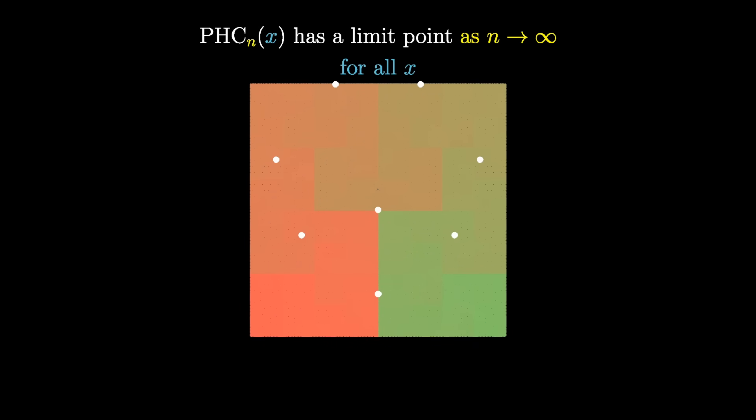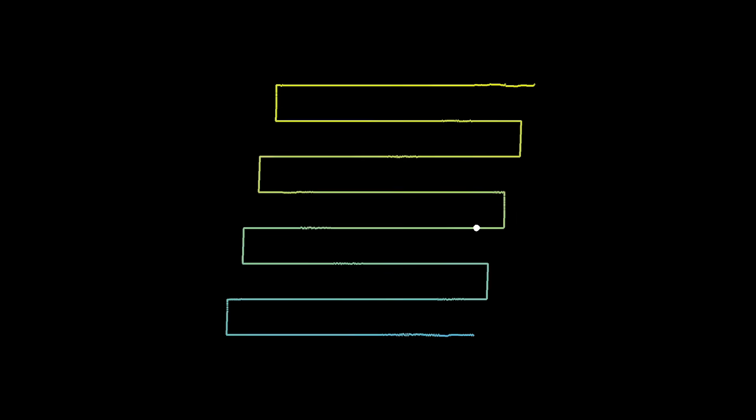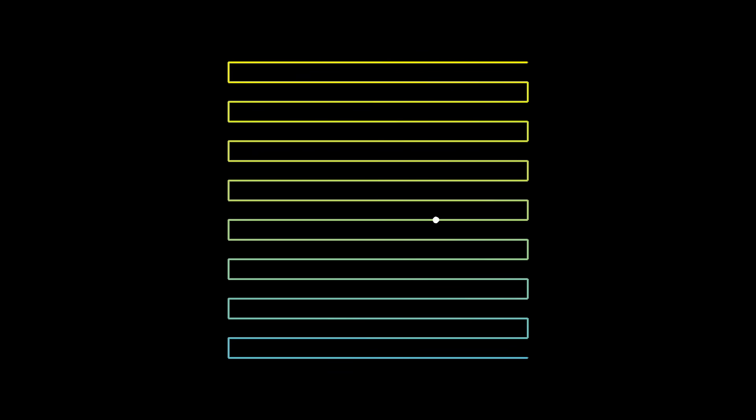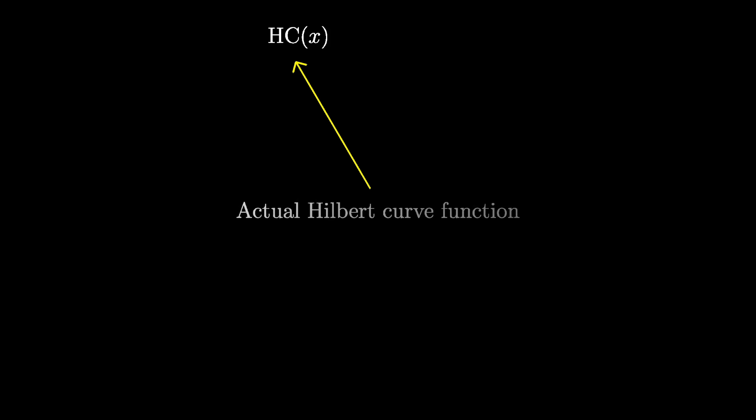This is absolutely not true, by the way, for snake curves, or for that matter most sequences of curves filling pixelated space of higher and higher resolutions. The outputs associated with a given input become wildly erratic as the resolution increases, always jumping from left to right, and never actually approaching anything.